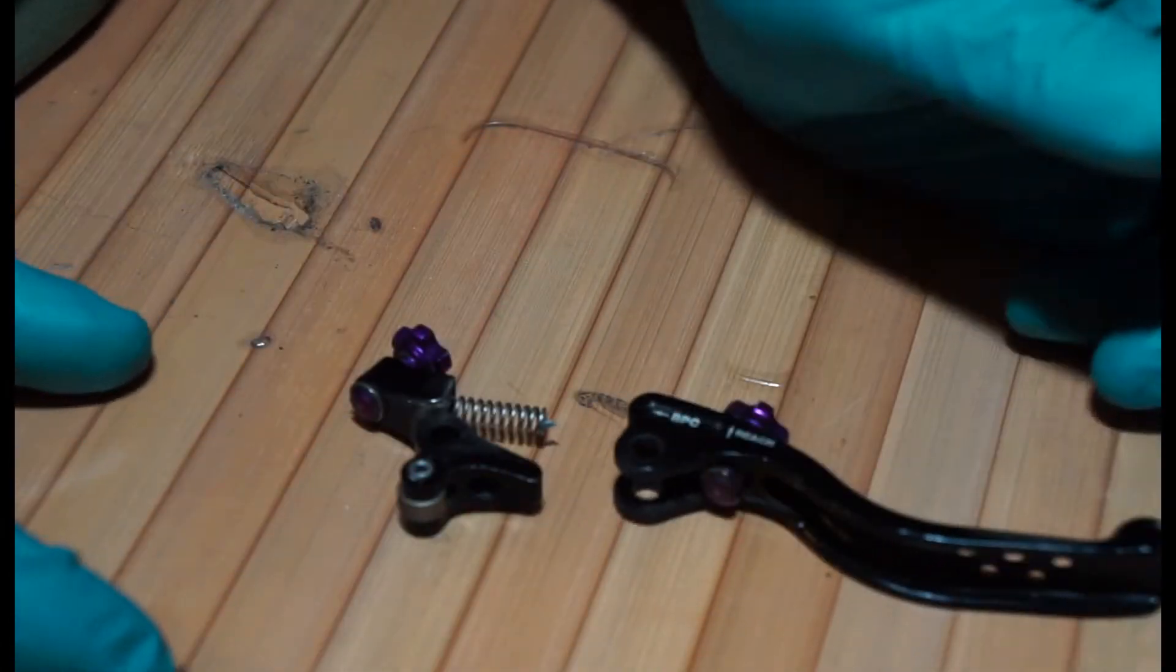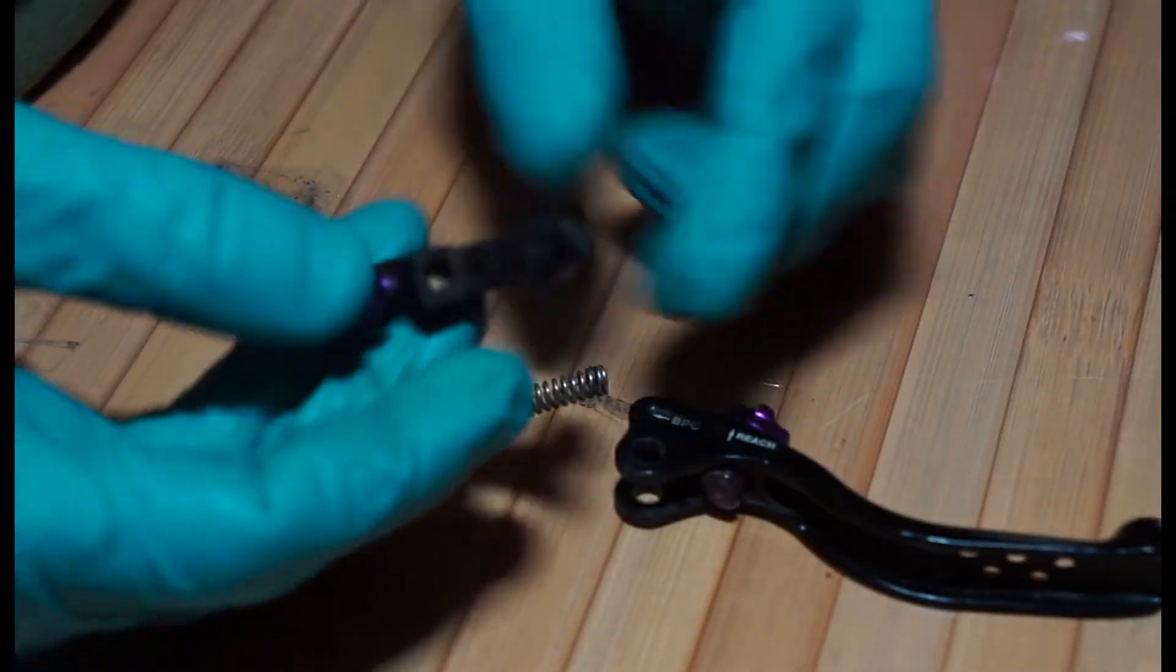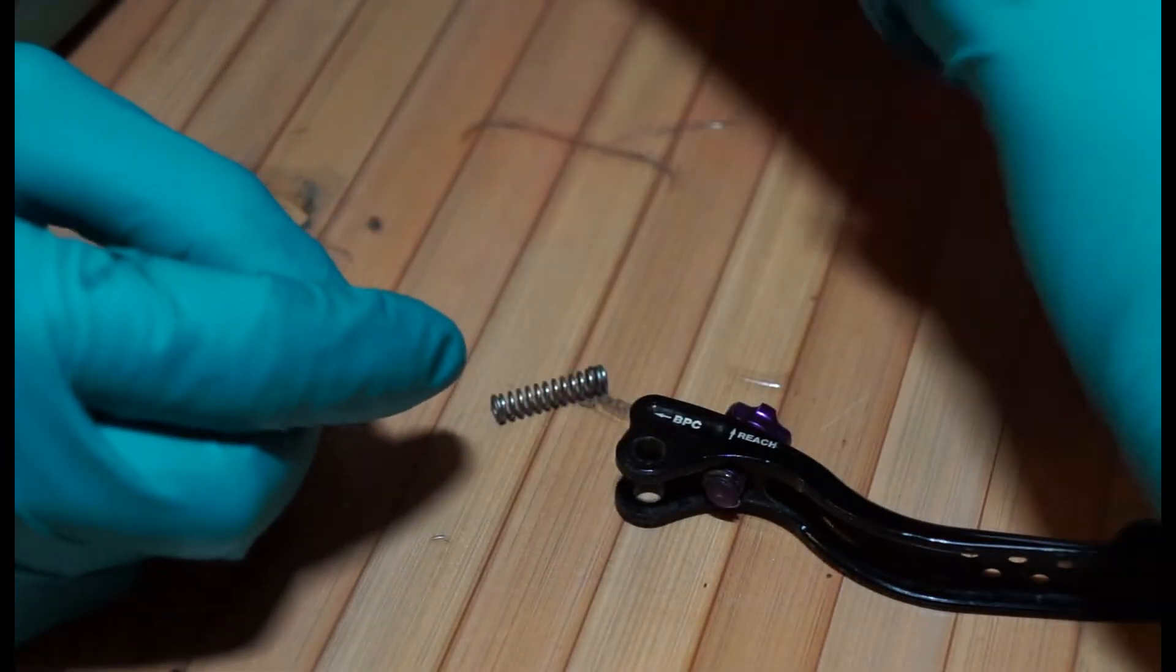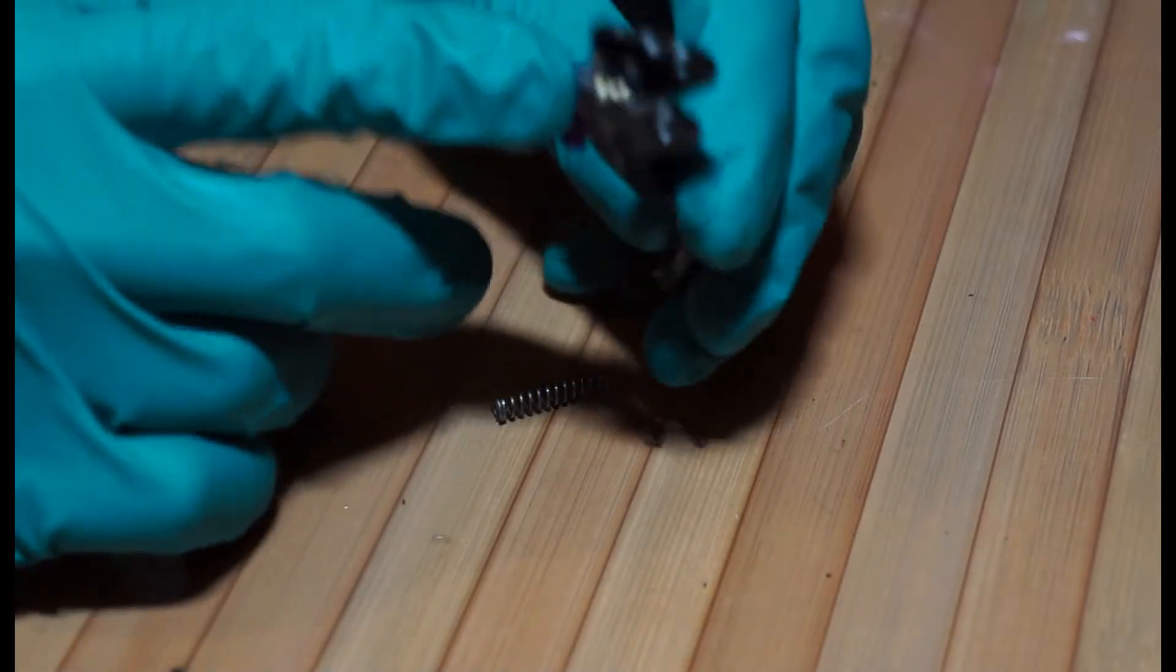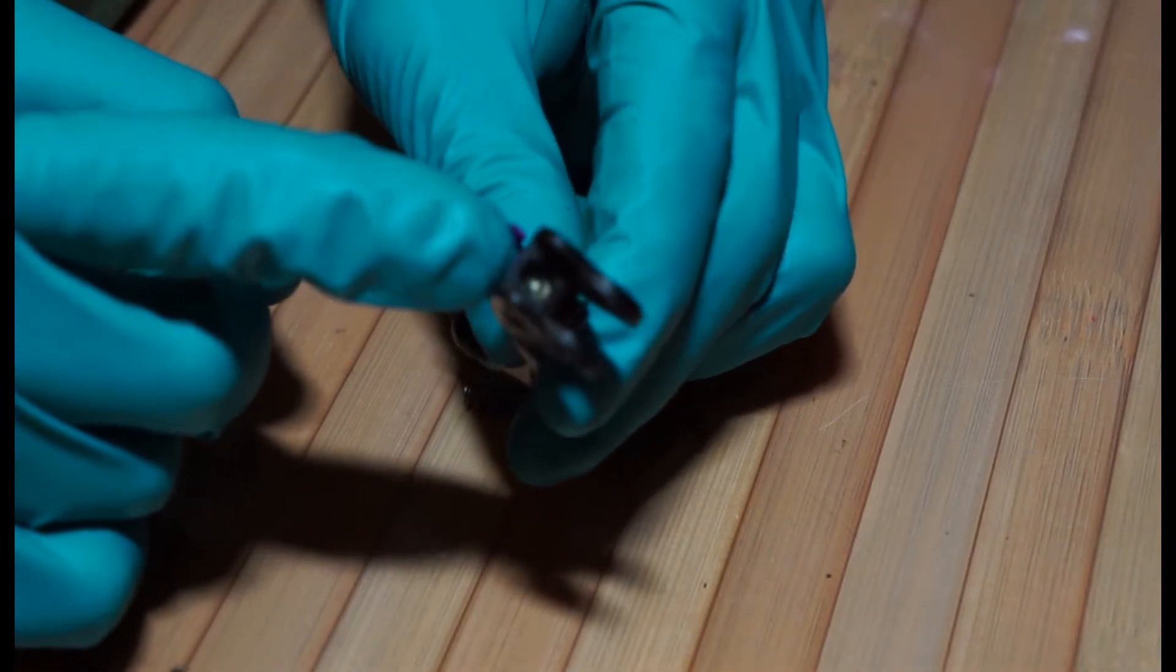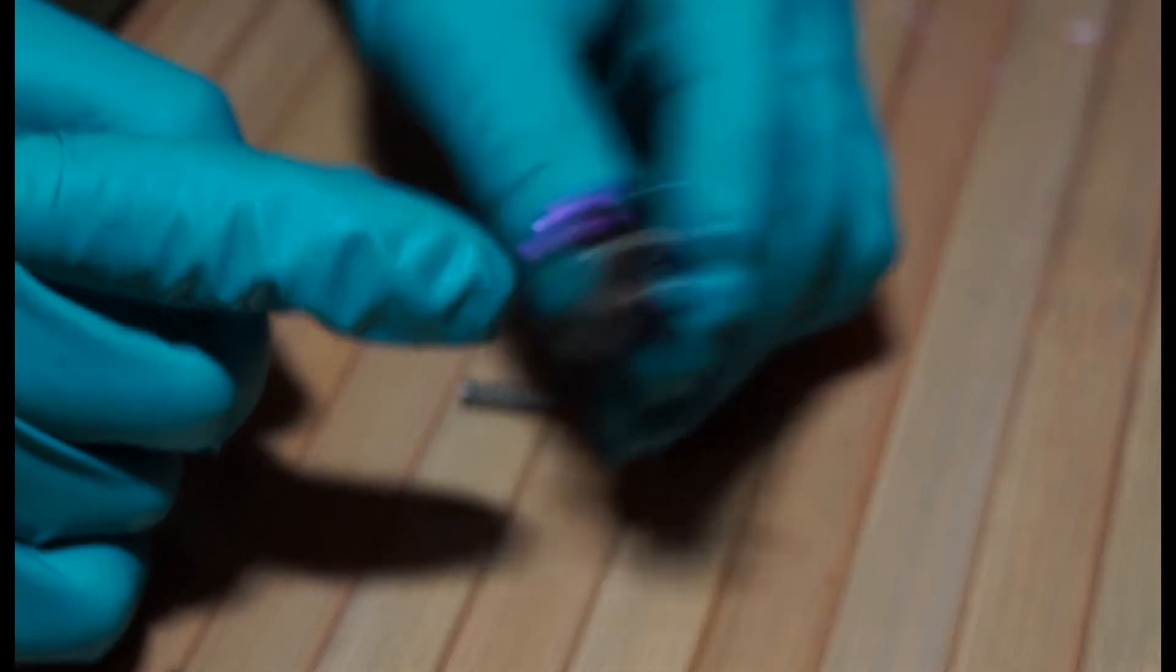It comes in two parts. There's a spring. Inside the little hole in there, there'll be a little brass insert. And in there, you can see, there's a little brass insert inside there.